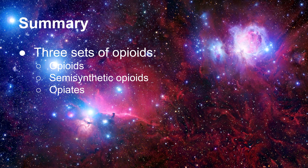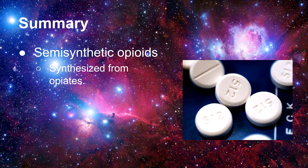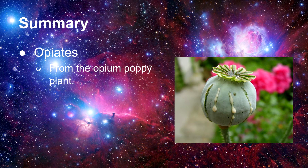In summary, there are three main sets of opioids. The first is simply called opioids, the second is semi-synthetic opioids, and the third is opiates. The opioid category includes all of the morphine-like substances which function primarily at opioid receptors, and as such it includes natural, semi-synthetic, and fully synthetic drugs. The semi-synthetic category includes drugs which have been synthesized from the opiates. And the opiates are from the opium poppy plant.